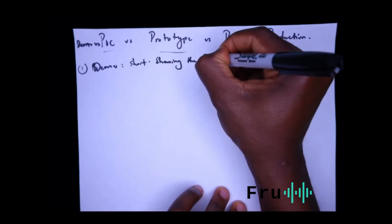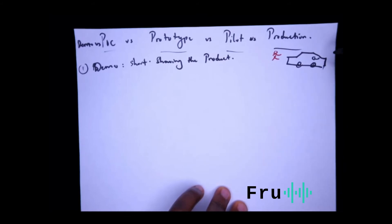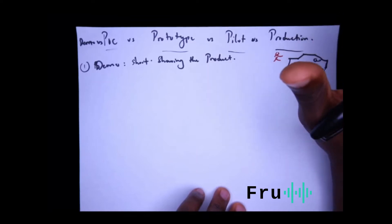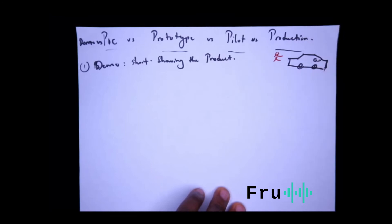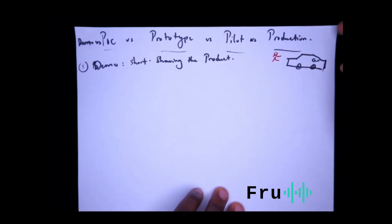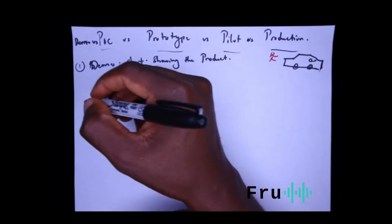A demo is just meant to show the product at a very high level. Sometimes they might customize the demo a little bit — instead of just showing you the car, they might show you the car on an incline if you're talking about a car that might go off-road. But basically it's still just showing you the product. Not a whole lot more to it — that's what the demonstration is about.